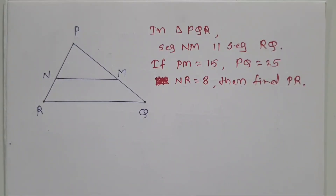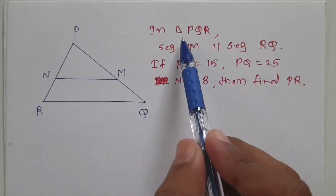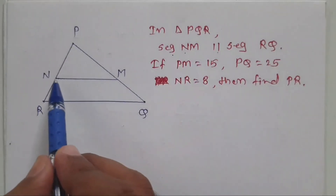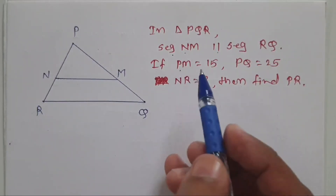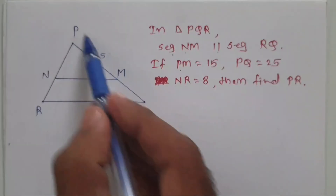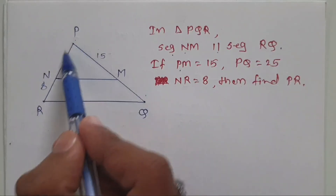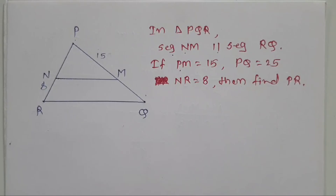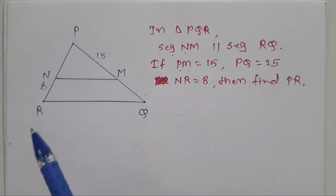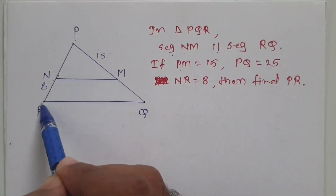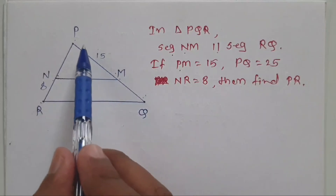Now we have one problem based on the Basic Proportionality Theorem. Consider triangle PQR in which segment NM is parallel to segment RQ. PM is given to be 15, PQ is given to be 25, and NR is given to be 8. From this we have to find PR. To use the Basic Proportionality Theorem for triangle PQR, we need the lengths PN, NR, PM, and MQ.